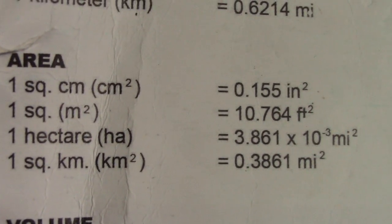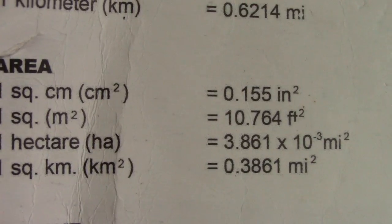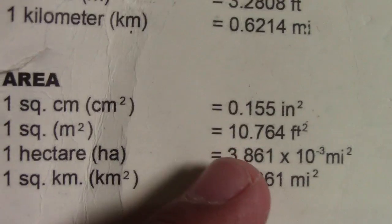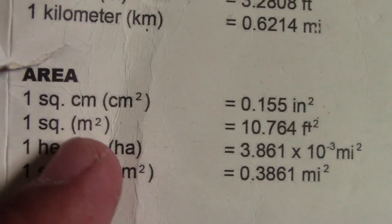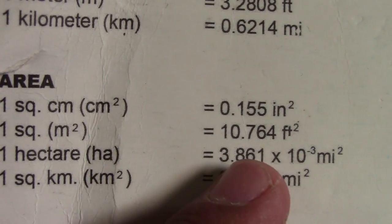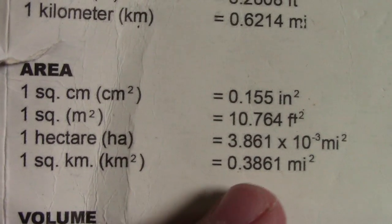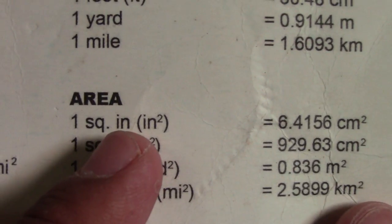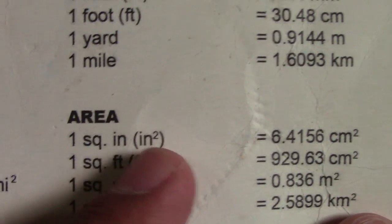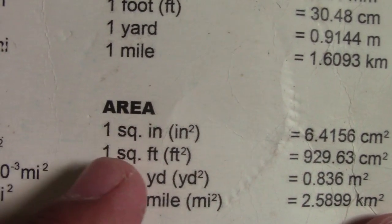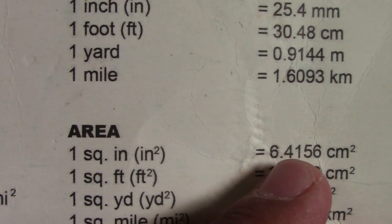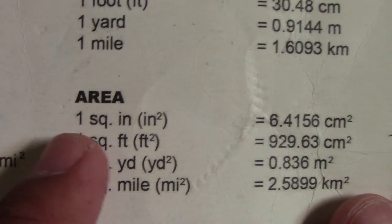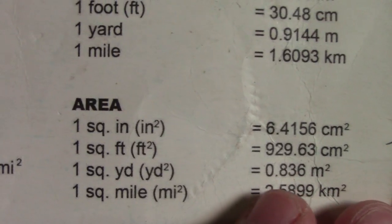Next is area conversions. Take note of all these numbers. One hectare — multiply by the given factor. One square inch equals 6.4516 square centimeters. Multiply by these numbers for whichever area unit you want to convert.